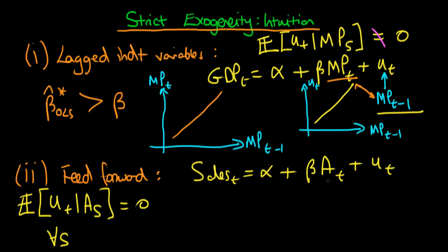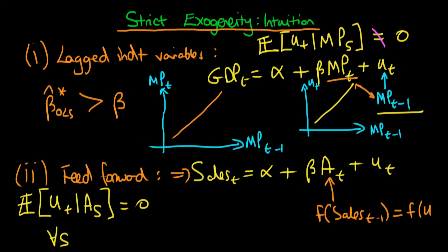This strict exogeneity assumption can be violated because advertising budgets are set dependent on previous levels of sales. So advertising at time t is some function of sales at period t minus one, which is itself some function of the error at period t minus one. This gives us some positive correlation, meaning we have a violation of the strict exogeneity condition.